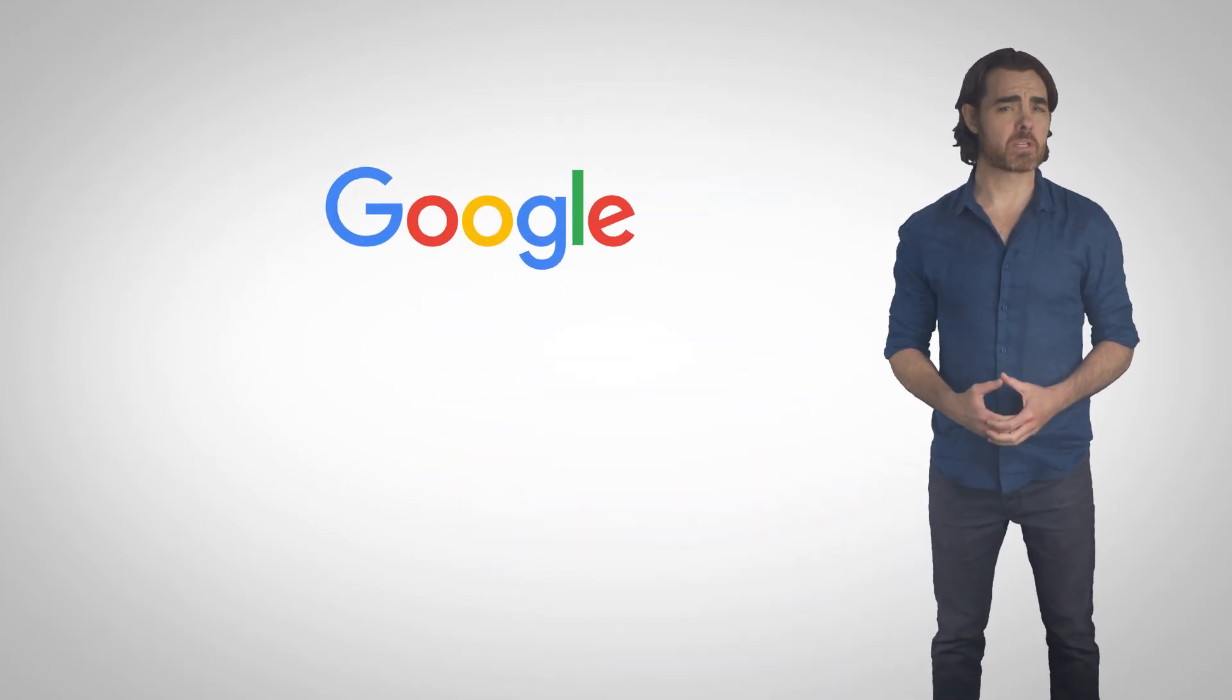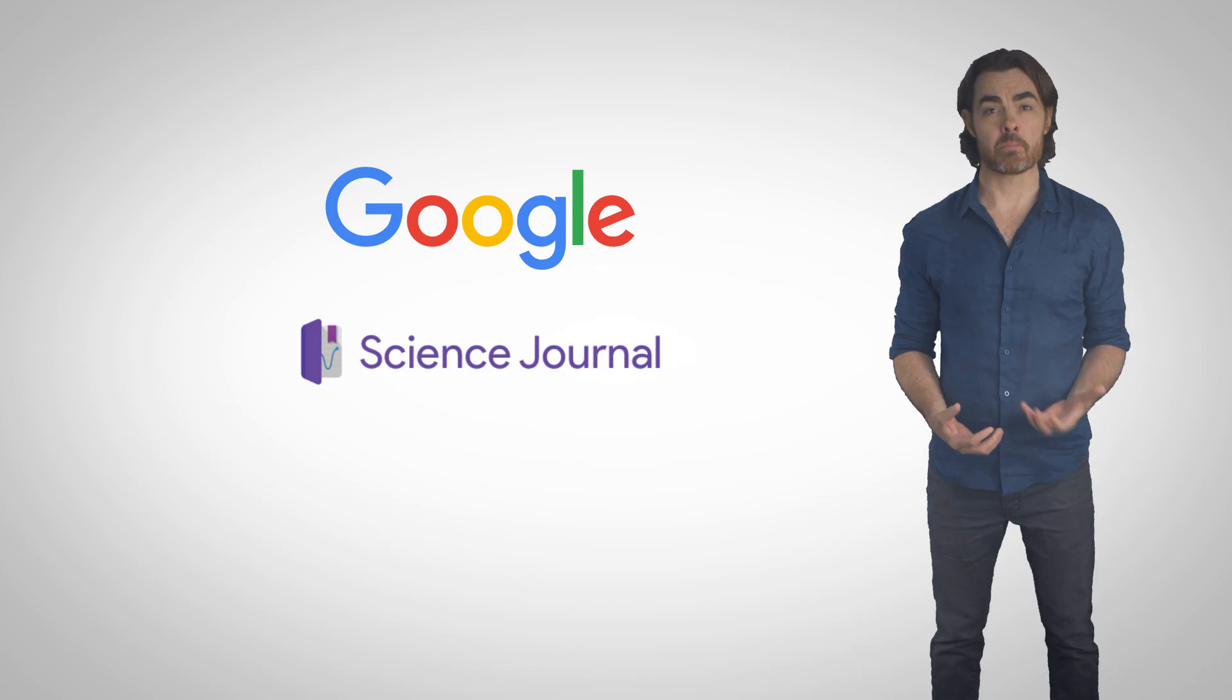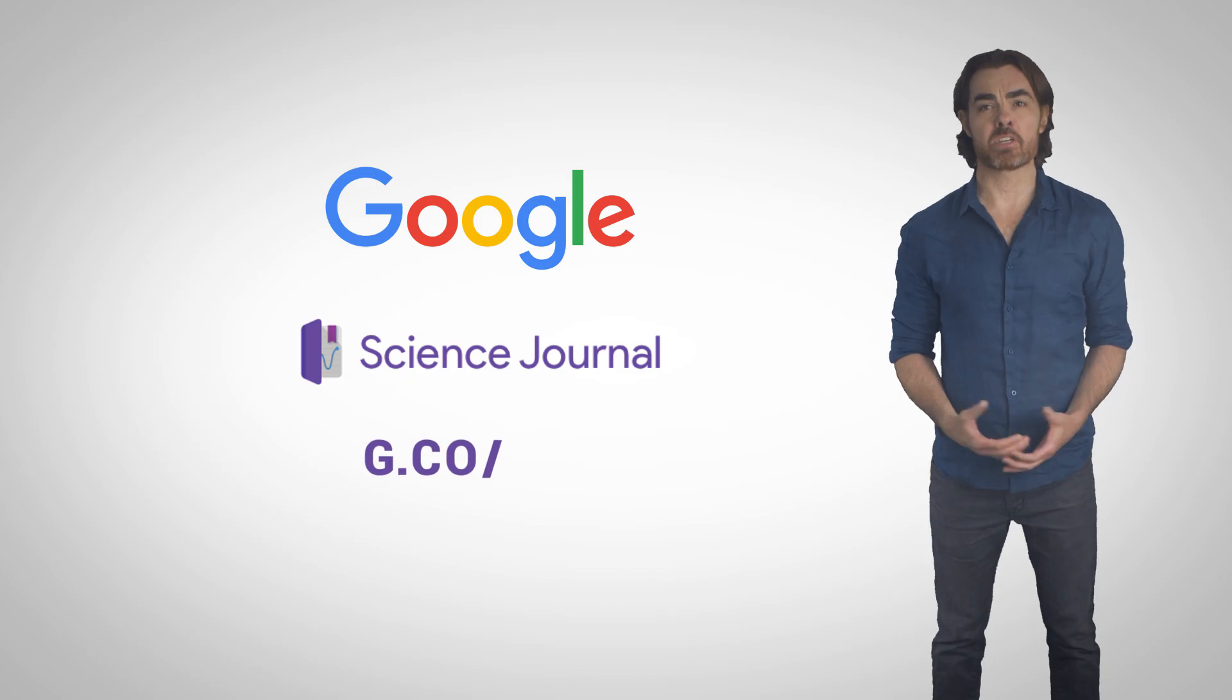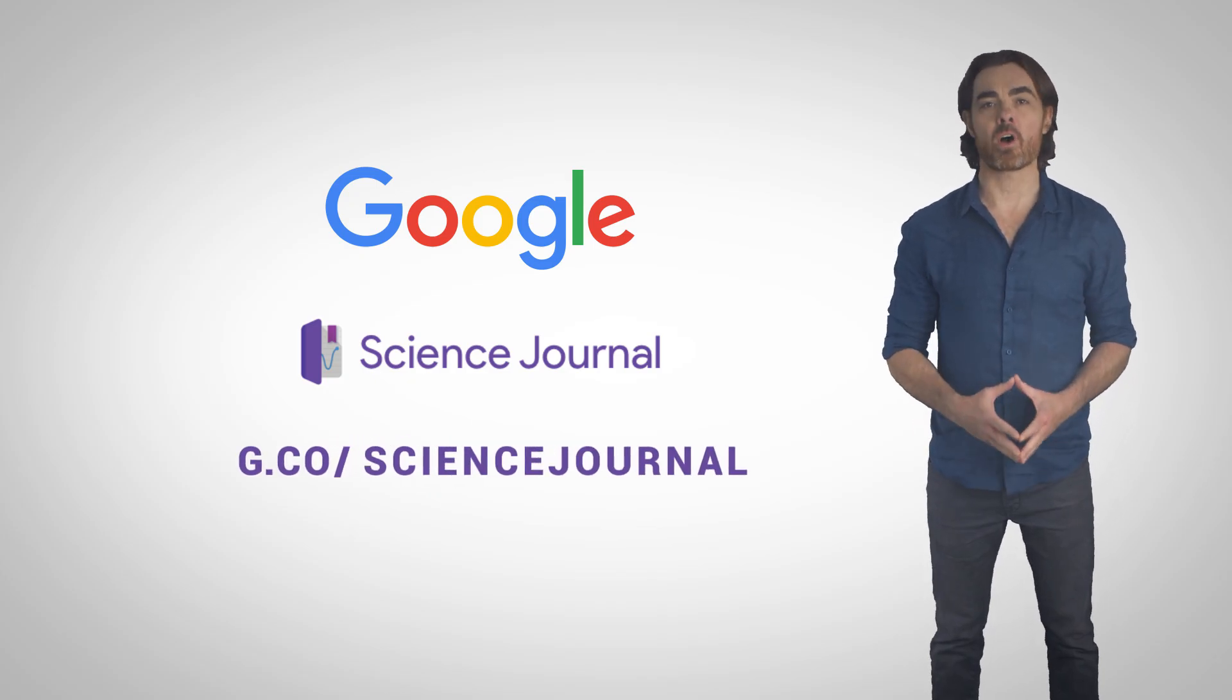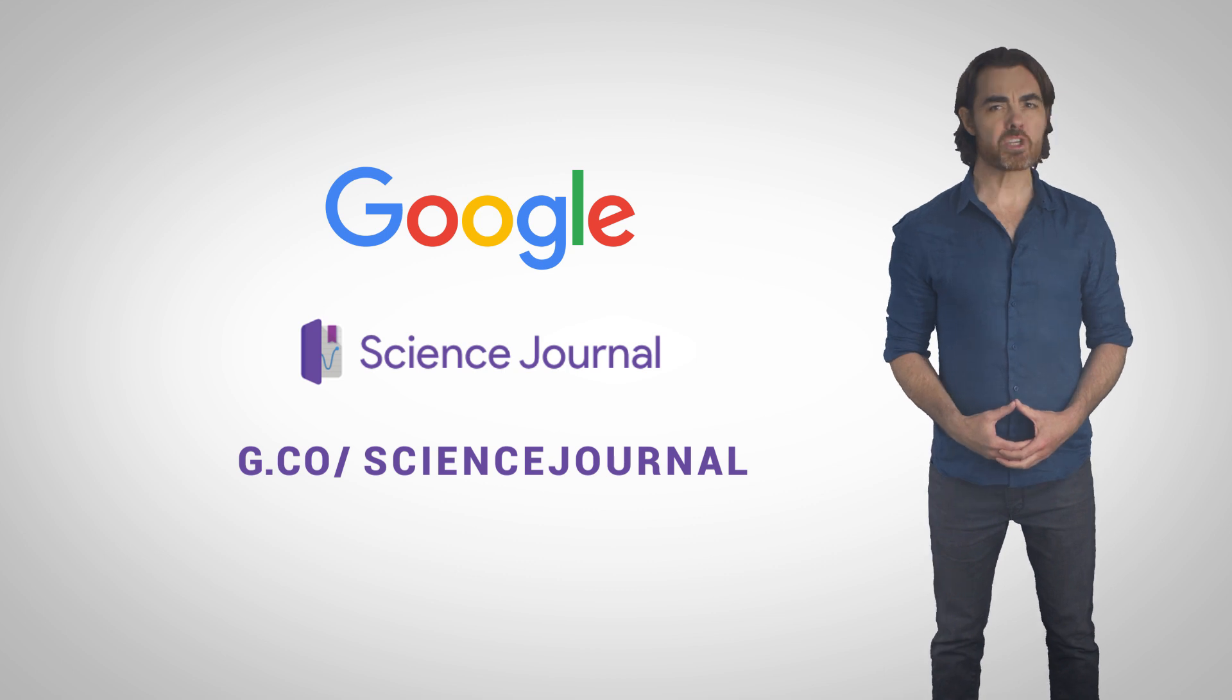Thanks to Google for supporting PBS Digital Studios. Their mobile app, Science Journal, lets you take notes and measure scientific phenomena, such as light, sound, and motion, using your phone, tablet, or Chromebook. You can find activity ideas and additional information on their website at g.co slash science journal, or check out the link in the description below.